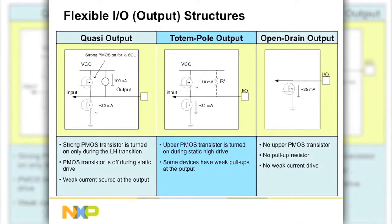NXP's GPIO expanders are classified into three different groups according to the output structure type: quasi output, totem pole or push-pull output, and open drain output.